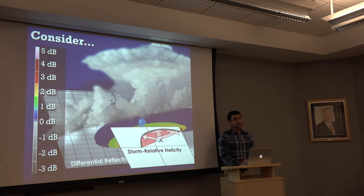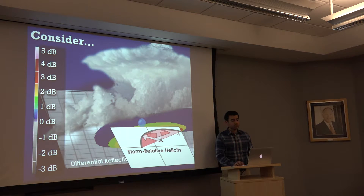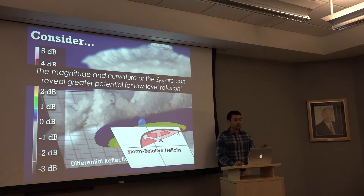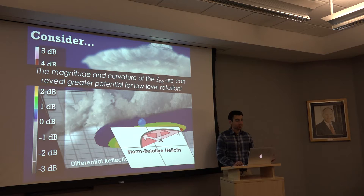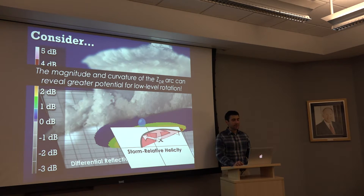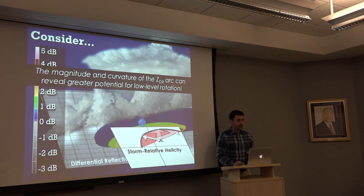If you see the ZDR arc signature, you can tie it back — the magnitude and the curvature of the ZDR arc can reveal greater potential for low-level rotation through that size-sorting ability. It's a pretty cool signature to see in terms of what you start to learn about what the storm is doing.